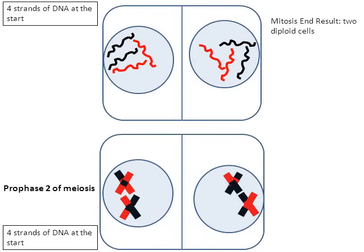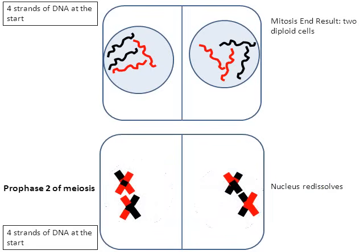Looking at the top cell — the top cell's finished. Mitosis is over. We started with one cell with four strands of DNA and we ended with two cells with four strands of DNA. Now let's focus on the bottom. Prophase number two of meiosis: there is no interphase number two, it just moves right on into prophase number two. The nucleus is going to often re-dissolve, and there it goes.